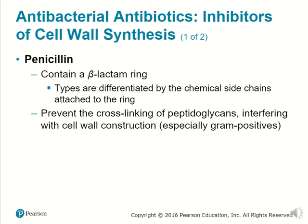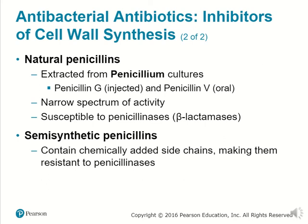There is an example of penicillin, which contains beta-lactam rings, differentiated by the chemical side chains attached to the ring. They prevent the cross-linking of peptidoglycans, interfering with cell wall construction. This is particularly effective against gram-positive germs due to their thick cell walls. There are natural penicillins extracted from Penicillium cultures, such as penicillin G, which can be injected, and penicillin V, which can be taken orally. They have a very narrow spectrum of activity, and they can be susceptible to penicillinases such as beta-lactamases, which make those antibiotics no longer functional.